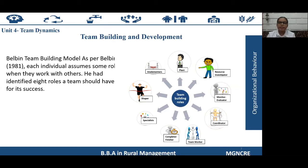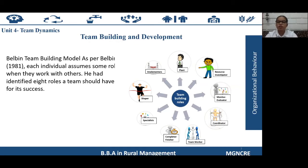As per Belbin, each individual assumes some role in where they work and how they work with others. Based on this, he identified eight different roles that teams should have. A person might be a plant, a resource investigator, a monitor evaluator, a coordinator, a team worker, a completer finisher, a specialist, or an implementer.